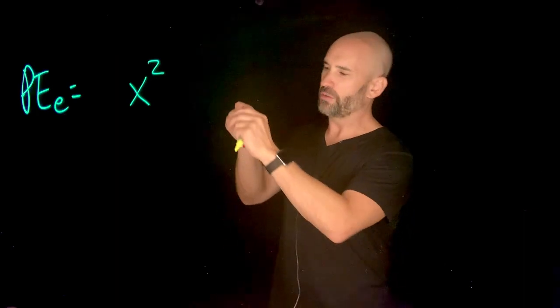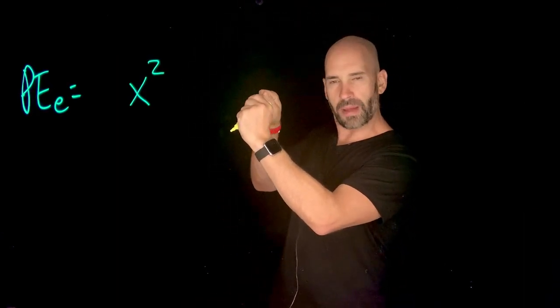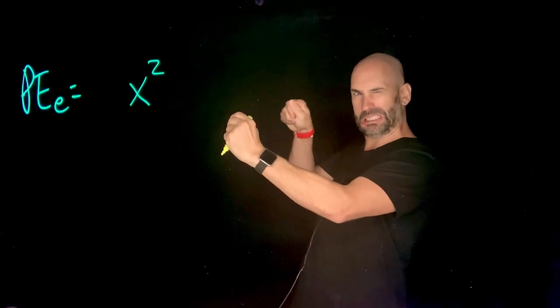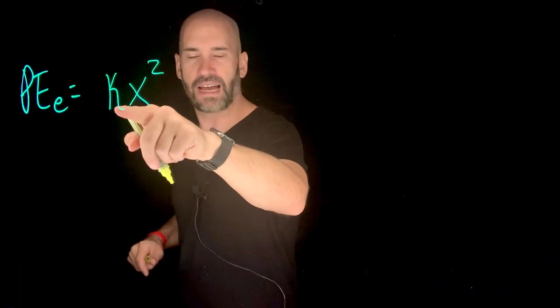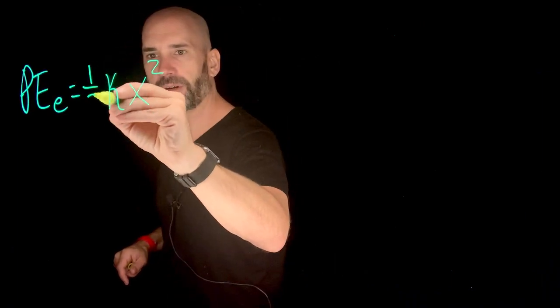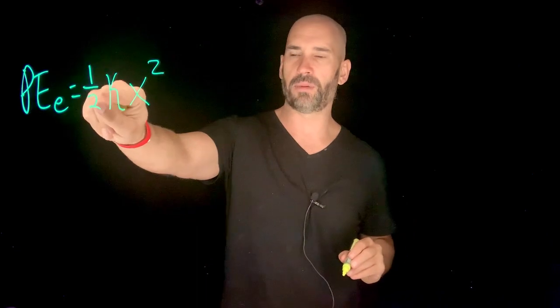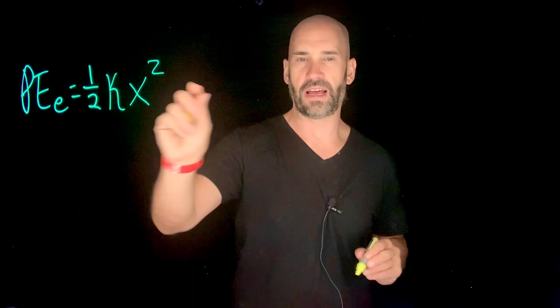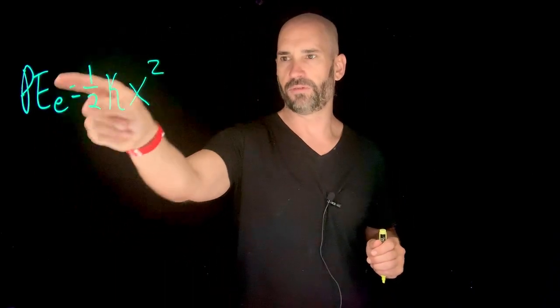Secondly, it depends on how stiff the spring is, how stiff the elastic is. If it's just a little rubber band, that's not going to store a whole bunch of energy. But if it's like tire rubber, the amount of spring constant also determines the potential energy. And then there's this little one half here. The one half is outside the scope of the course. We're not going to talk about why we get that, but just know that the form of the potential energy for any kind of elastic or spring is given by this formula.